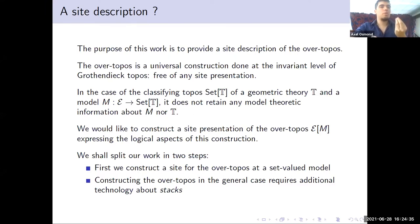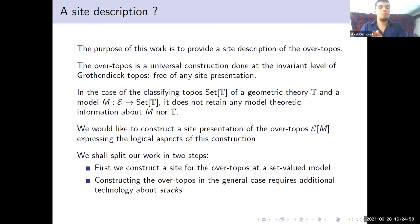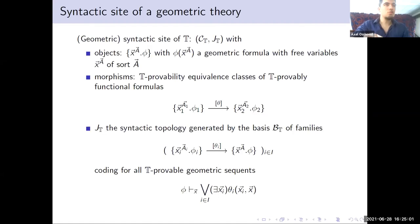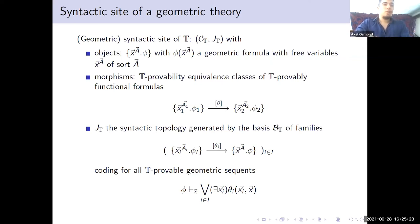We will proceed in two steps: first for the case of a model in Set, that is for a point of a topos, and then for the general case of an arbitrary geometric morphism, which will use more involved technology about stacks, indexed categories, and so on. For the Set-evaluated case, recall that for a geometric theory you have its syntactic site, whose objects are formulas in context, morphisms are provable-equivalence classes of provably functional formulas, and the syntactic topology is generated by covers encoding the disjunctive sequents of your theory.